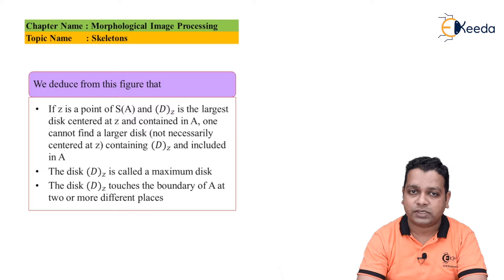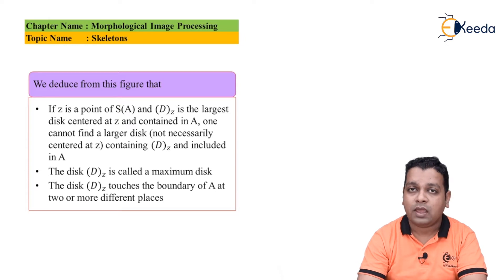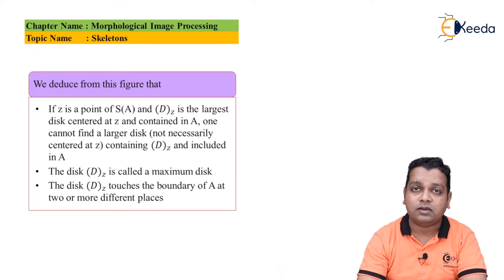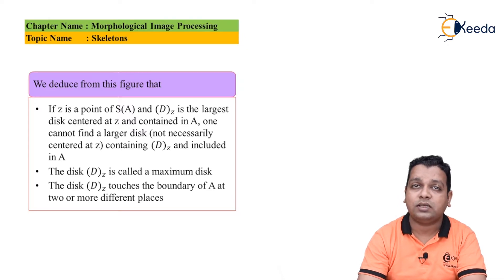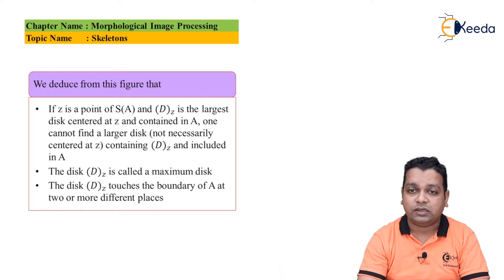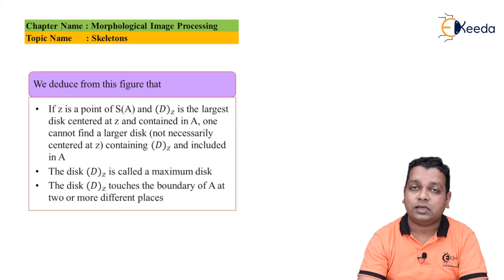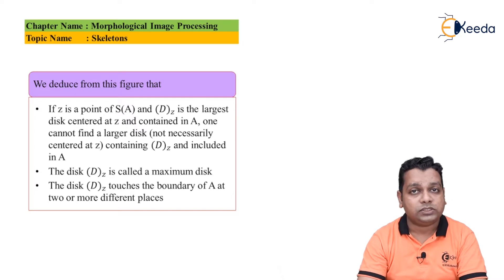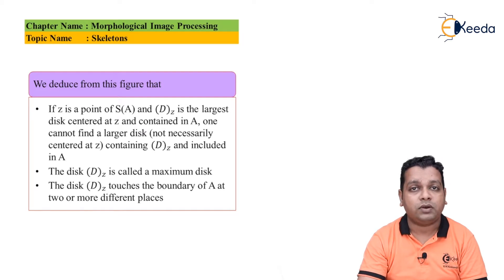From this figure we can deduce a few points. If Z is a point of the skeleton S(A), then D_z is the largest disc centered at Z and contained in set A. One cannot find a larger disc containing D_z and included in A. This disc D_z is called the maximum disc, and it will touch all the boundaries of set A at two or more different places.